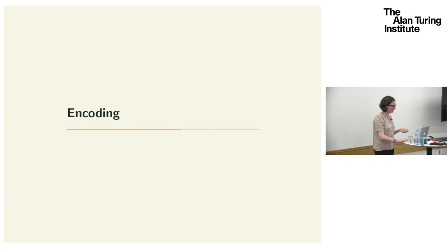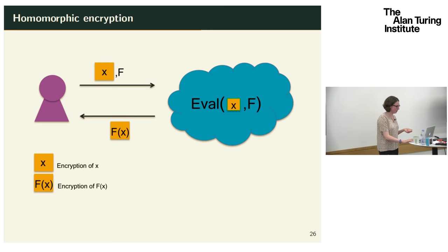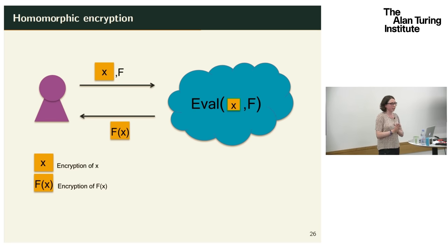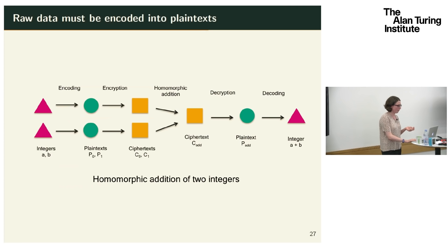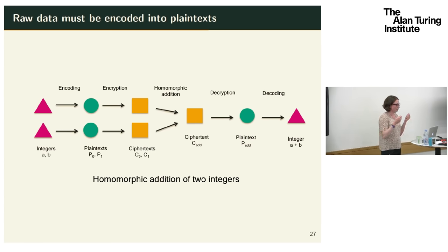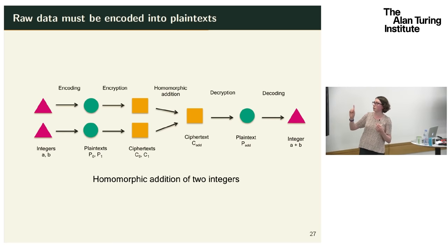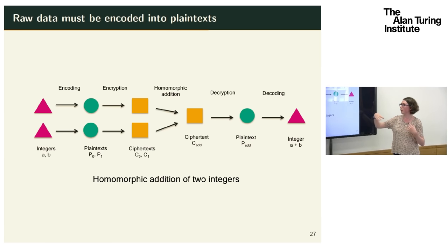Now for part two: encoding. Earlier I showed the simple client-server picture, but I made an implicit assumption. The client's data x may not already be in the natural plaintext space of the scheme. The plaintext space is typically a polynomial ring, whereas raw data might be an integer, rational, or complex number. So you need a valid encoding mechanism to transform raw data into the plaintext space, and a decoding mechanism to interpret the output plaintext back as a raw data item.